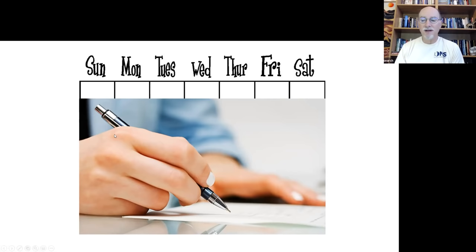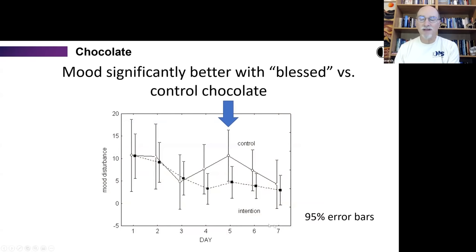The way to measure this then was we ended up with blessed chocolate and recruited people for that part of the experiment and control chocolate. And of course the people didn't know which kind of chocolate they were dealing with and the people who gave them didn't know either. So it was double blind in that sense. So the measurement was mood. So the intention imprinted in the chocolate was about changes in mood. So we asked them to record their mood using a standardized scale every day over the course of a week and the three middle days of the week, they would eat the chocolate at 10 AM and 3 PM.